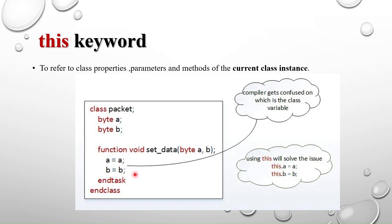We write 'this.a = a' and 'this.b = b' instead of 'a = a' and 'b = b'. Now the compiler understands: 'this.a' refers to the current class instance's property 'a', and 'this.b' refers to the class property 'b', while the plain 'a' and 'b' refer to the arguments. This is how 'this' resolves the compiler ambiguity.